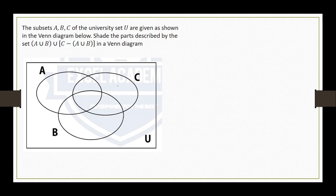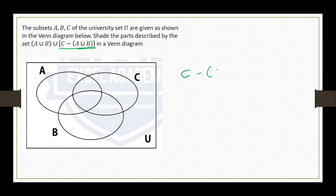In this particular question the diagram has already been given, so there is no need to draw one from scratch. We have been told that subsets A, B, C of the universal set are given as shown in the diagram below. We need to shade the part described by the set (A union B union C) minus (A union B). I'll start with what is inside the big bracket: C minus (A union B).